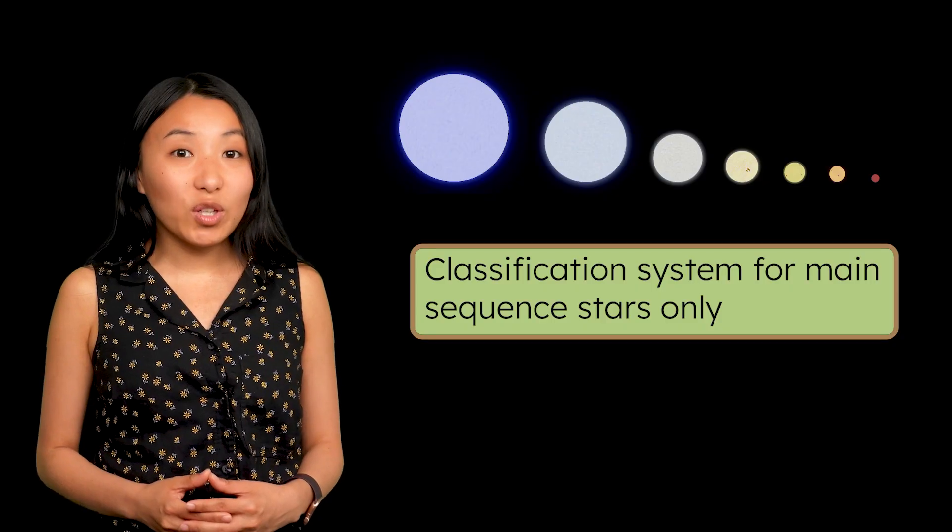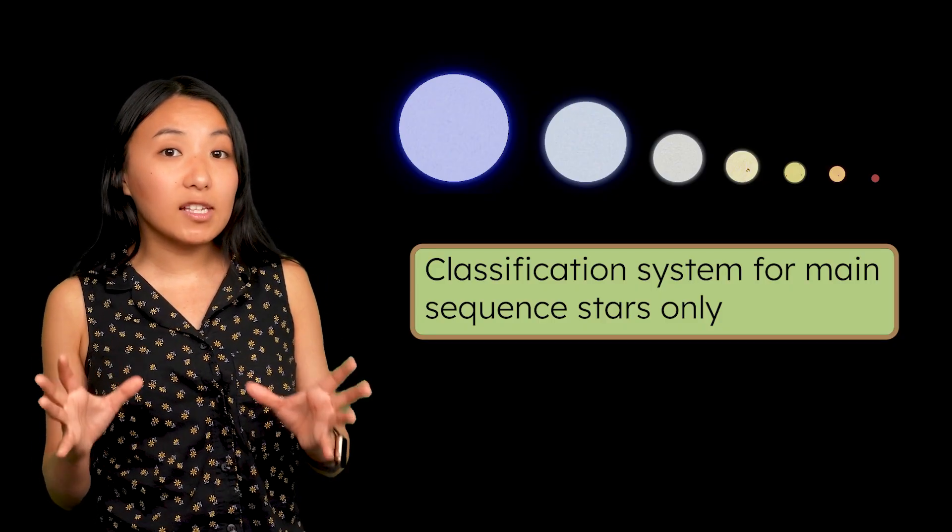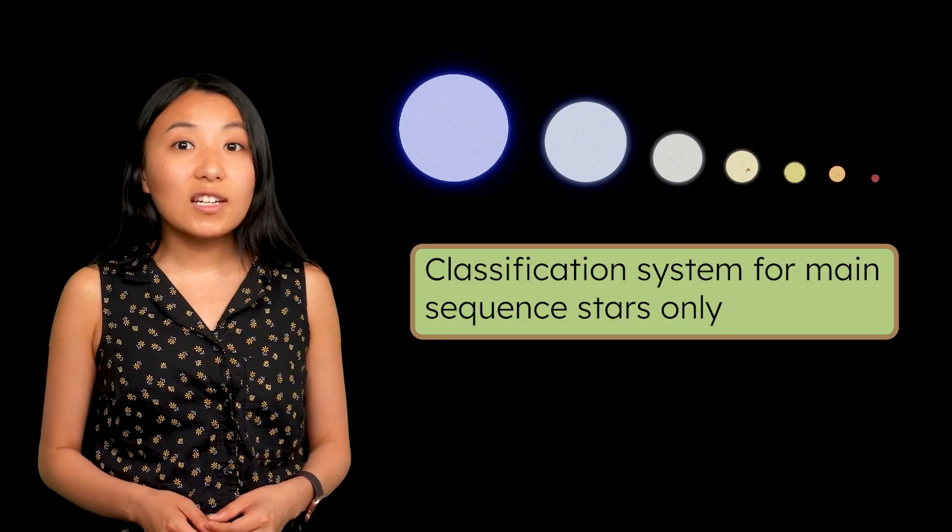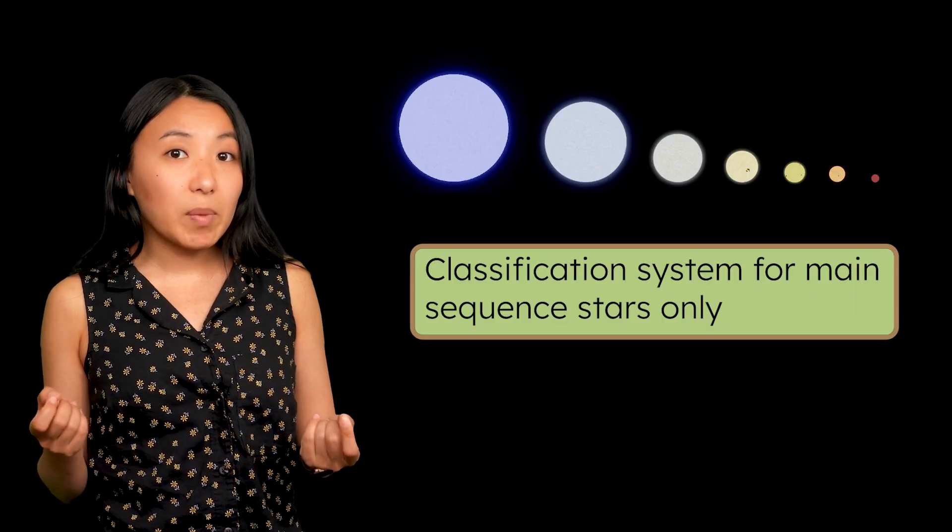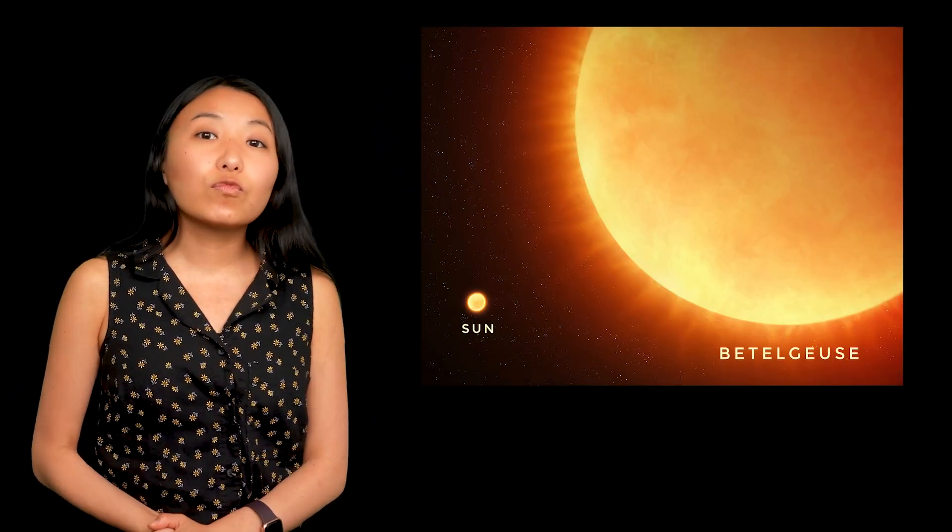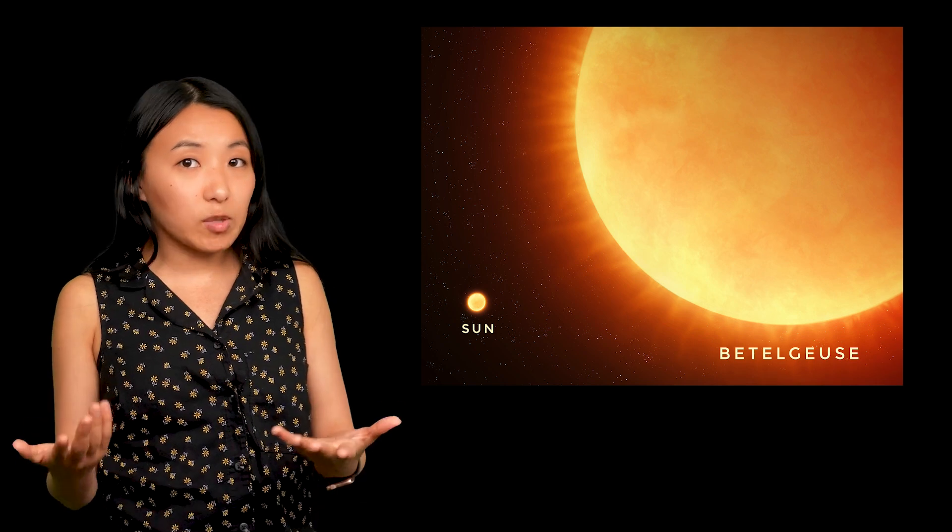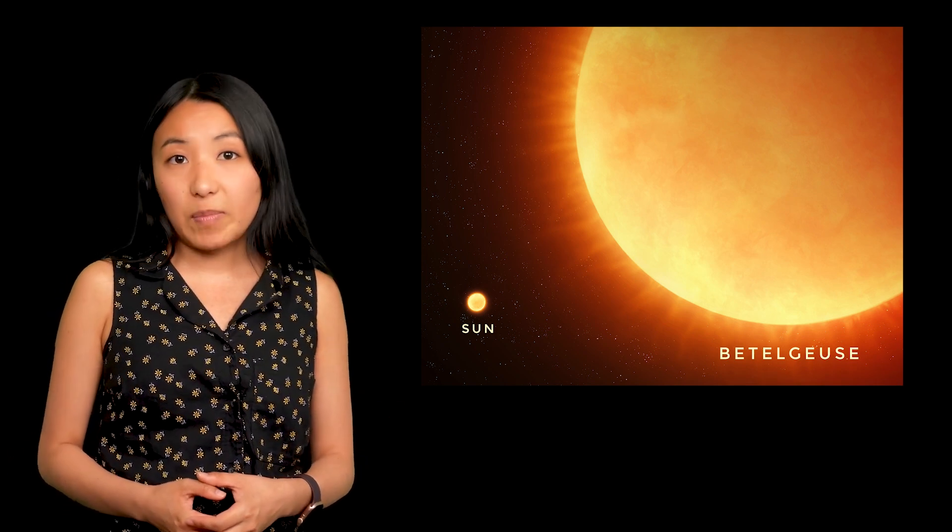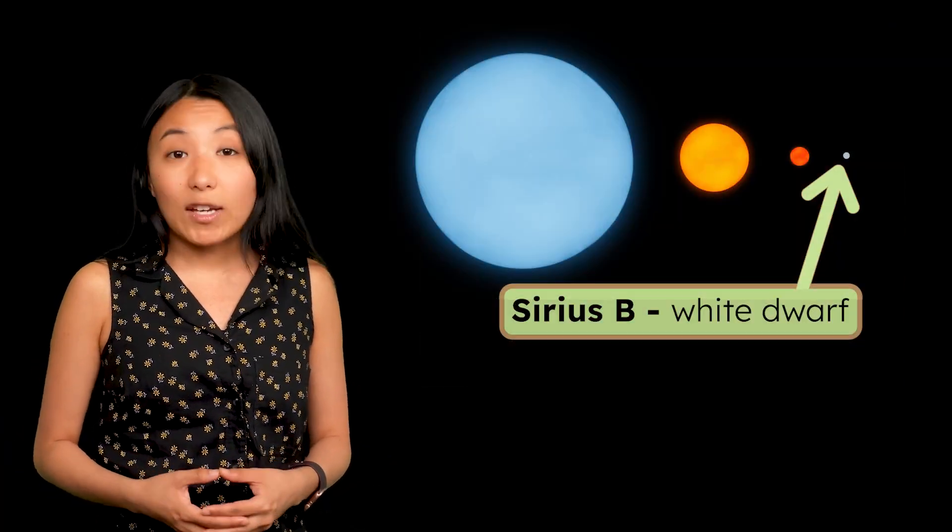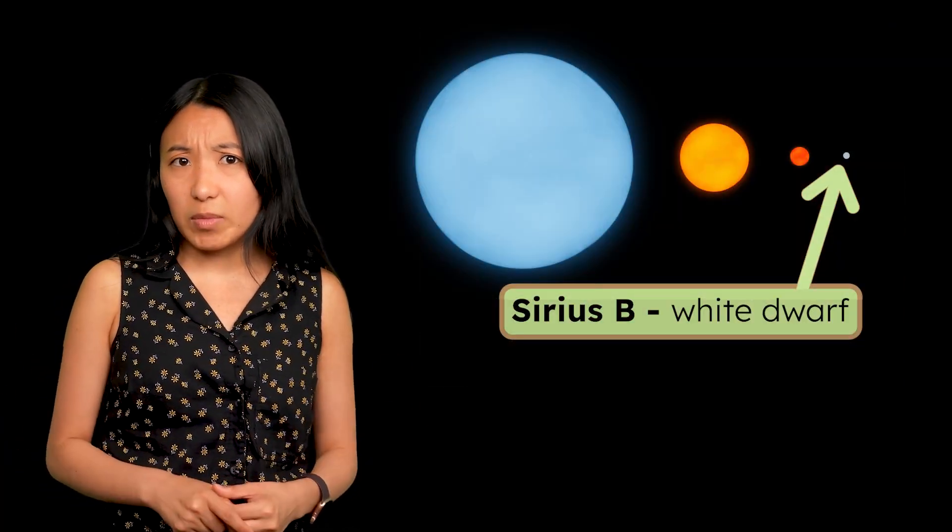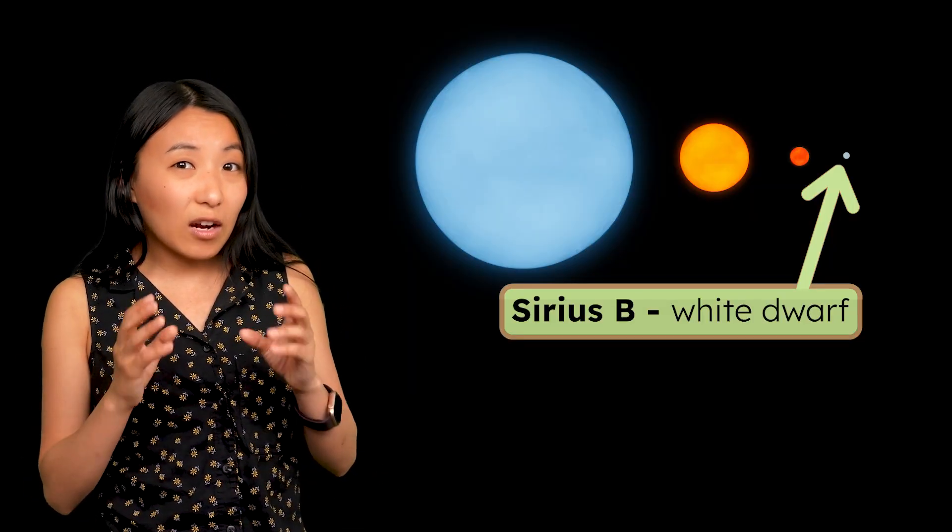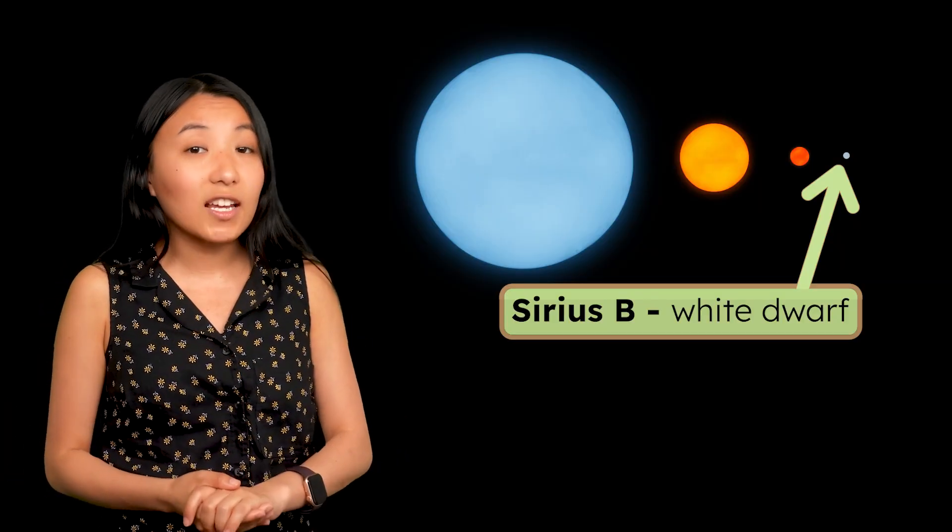But this classification system only works for stars that are part of the main sequence group, which simply means stars that are in the normal part of their adulthood. Stars near the beginning or end of their lifespans won't show these predictable relationships between color, size, and temperature. For example, red giants and supergiants, such as Betelgeuse, are older stars that have cooled and expanded. They're large and bright, even though they are cool and red. White dwarves, like Sirius B, show just the opposite anomaly. They are the leftover cores of stars that have used up their fuel. Even though they are small and dim, they are extremely hot and white.